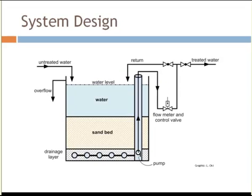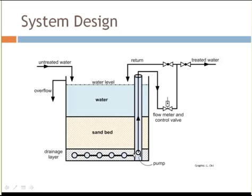Here is a graphic of how a slow sand filter might look. Untreated water is introduced into the sand bed container, with about a one-meter water depth. The sand bed is below that at a one-meter depth. Below that is an underdrain system consisting of a pipe manifold with perforated pipe and pea gravel to collect the treated water. That treated water is pumped out of the containment unit and through either a flow measuring or flow control device, and then out into the system for that water to be used.